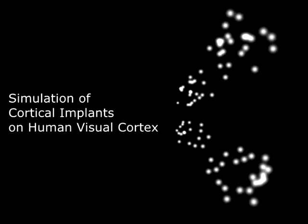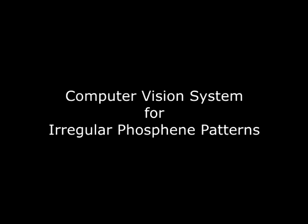A computer vision system for irregular phosphene patterns was designed, implemented, and tested. By using a camera map, which is shown on the left, the system can be tailored to the unique phosphene patterns of individual patients.